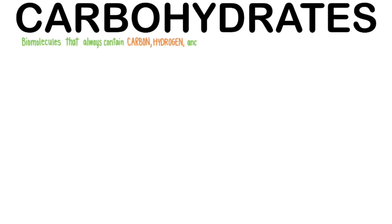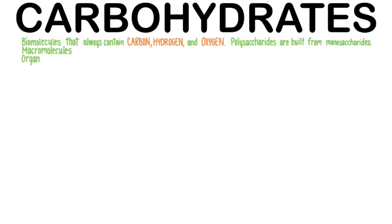Carbohydrates are biomolecules that always contain carbon, hydrogen, and oxygen. Polysaccharides are built from monosaccharides. Also known as macromolecules or organic molecules, there are a total of three popular names for polymers of carbohydrates.